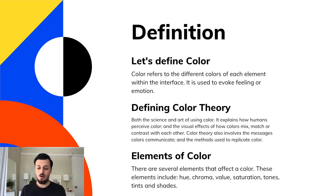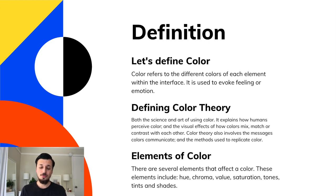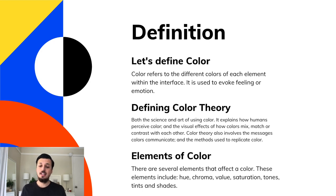There are several elements of color. I have seven here. These elements include hue, chroma, value, saturation, tones, tints, and shades. So now we're going to take a deep dive into these elements.